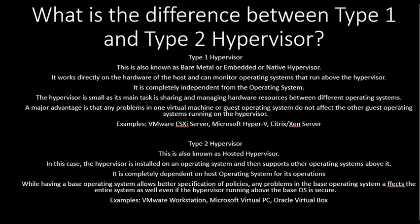Type 2 hypervisor, also known as the hosted hypervisor: in this case, the hypervisor is installed on an operating system and then supports other operating systems above it. It is completely dependent on the host operating system for its operations. While having a base operating system allows better specification or policy, any problem in the base operating system affects the entire system as well, even if the hypervisor running above the base OS is secure. Examples: VMware Workstation, Microsoft Virtual PC, and Oracle VirtualBox.